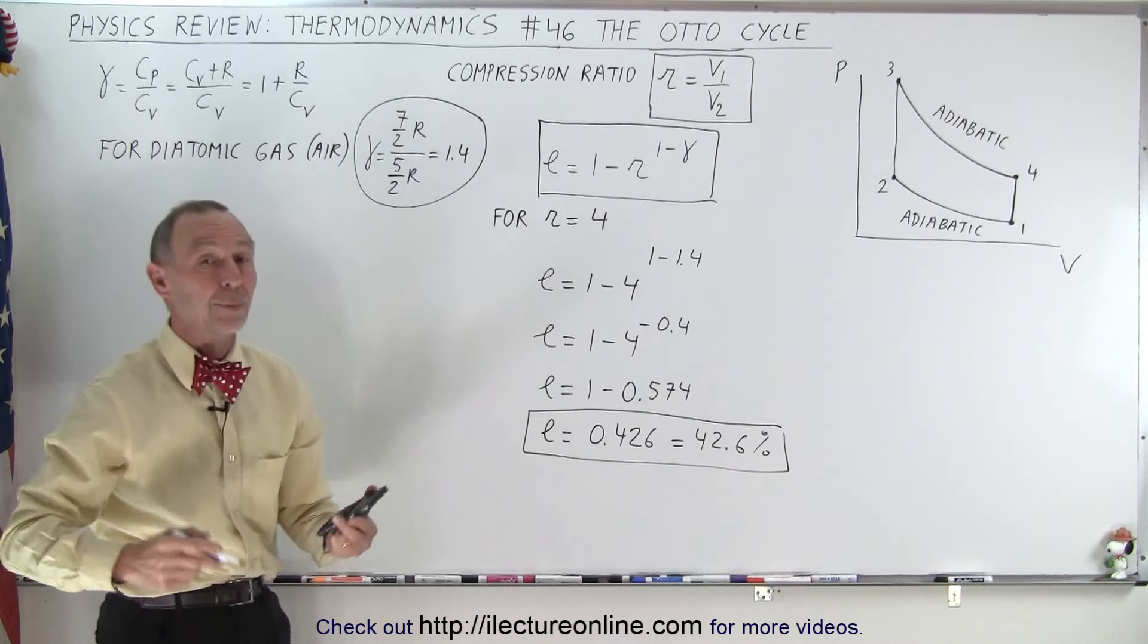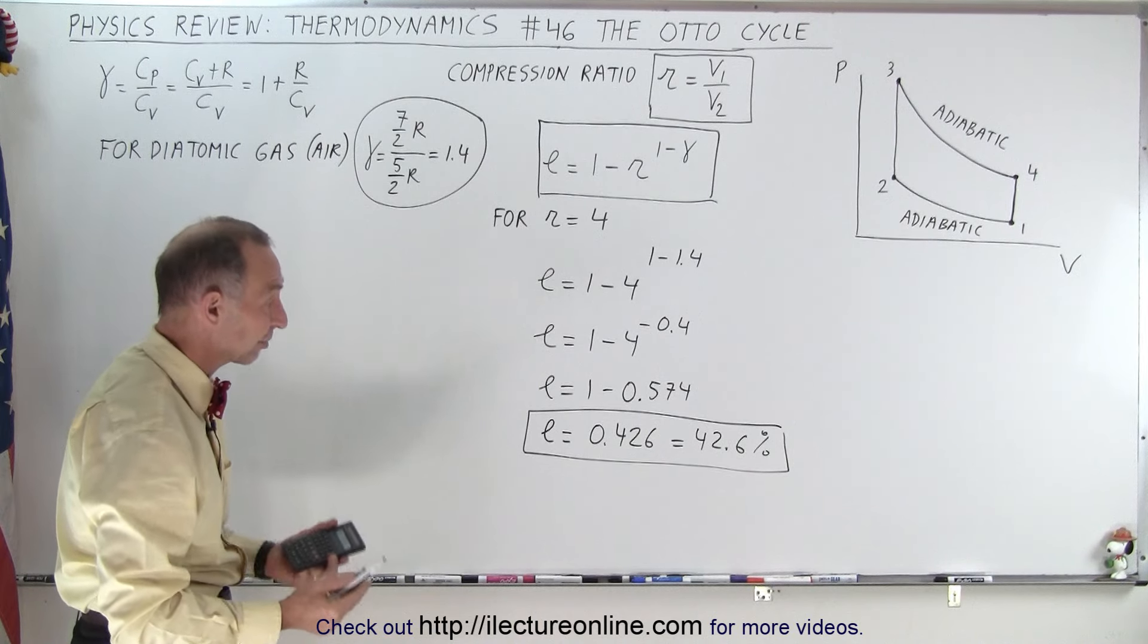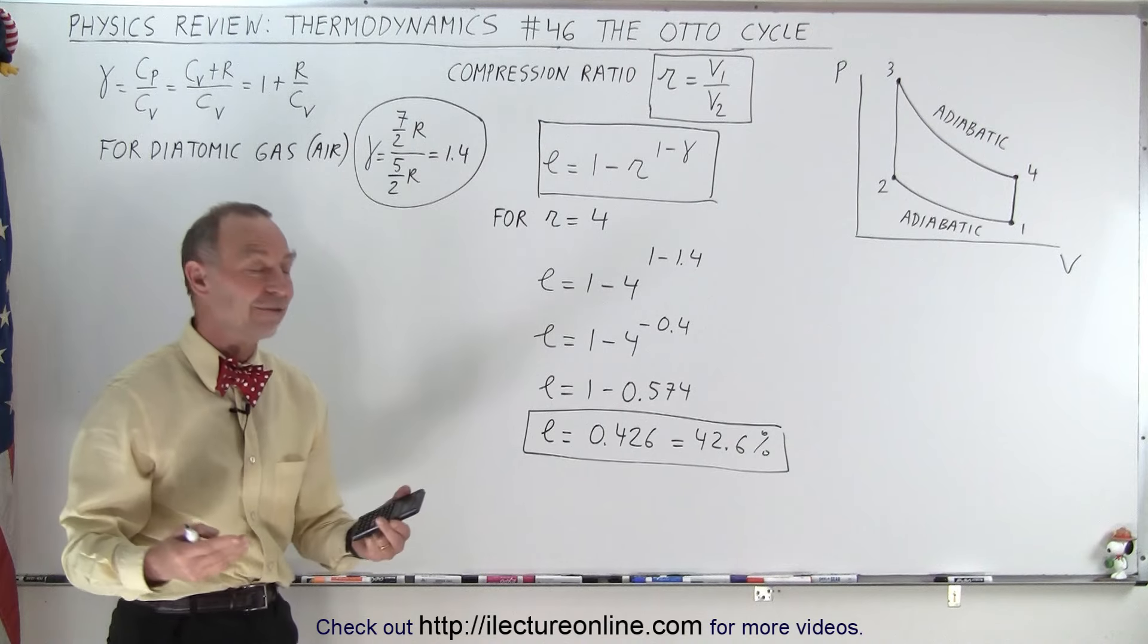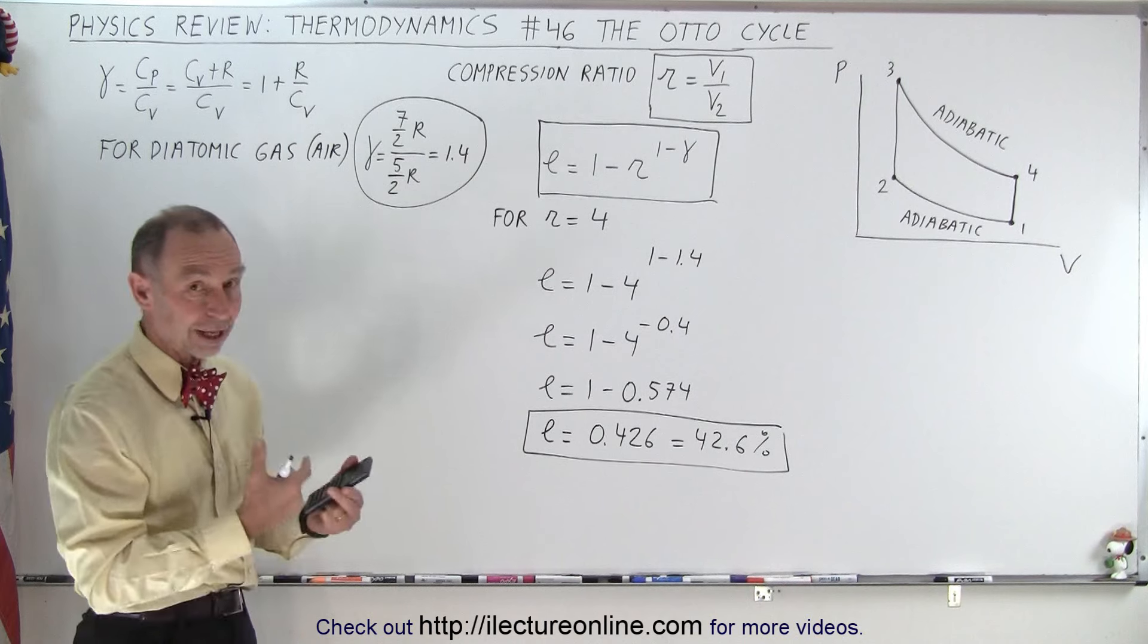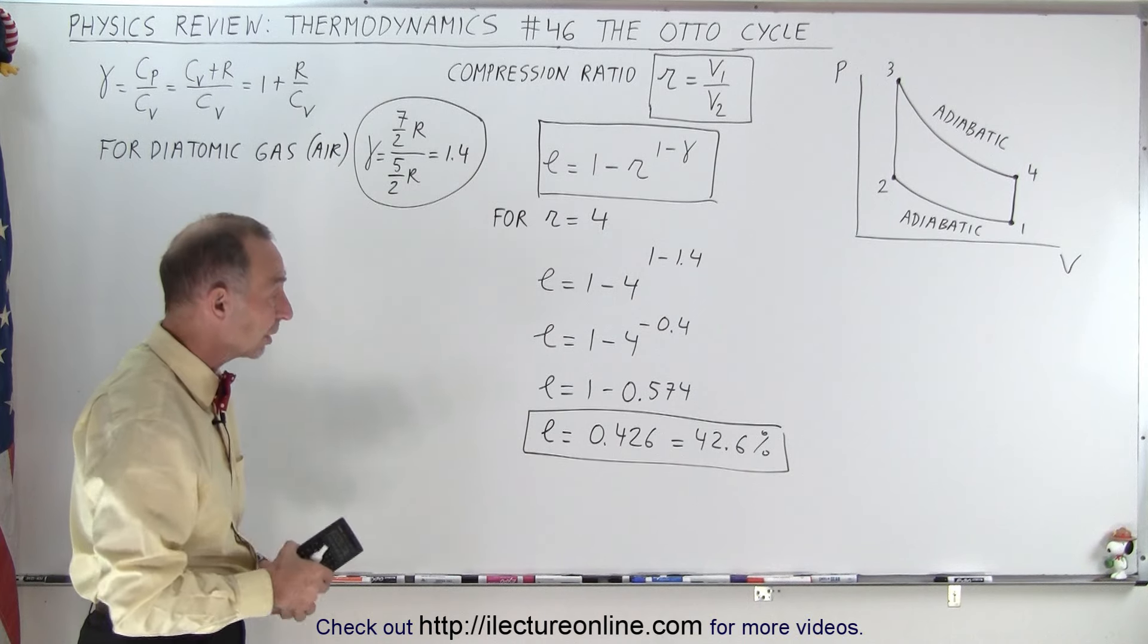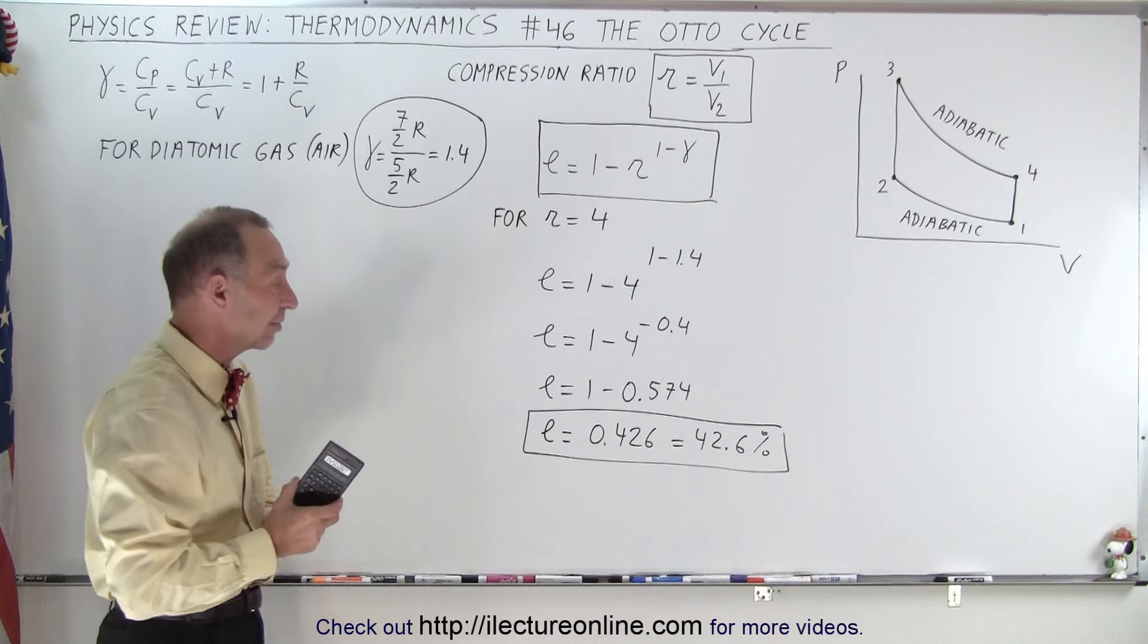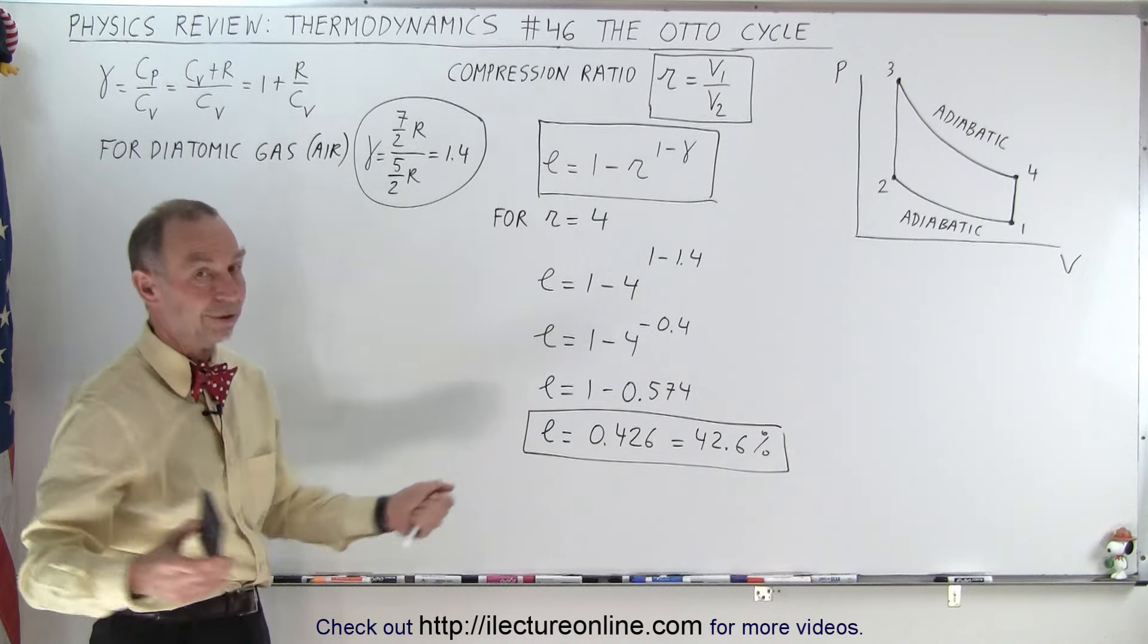So that's the theoretical efficiency of an Otto engine. That would be for a gasoline engine. That's quite high. Obviously you don't get that efficiency because there's all kinds of heat loss. The engine gets very hot, so there's a lot of heat loss due to the engines. They need to be cooled down, so you don't get that efficiency from a gasoline engine. But theoretically it could be as high as 42.6 percent if you can get it to work perfectly.